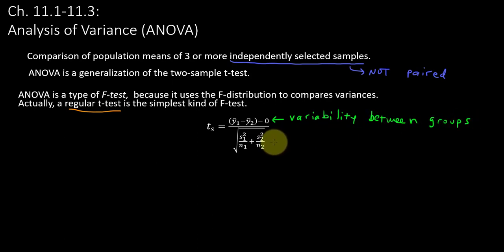And in the denominator, the test statistic here is the variability. We called it standard error—it is the standard deviation of the sampling distribution. And it has to do with s, standard deviation of the samples. So that's the variability within the groups. Those are two different types of variation. And because the test statistic here is a ratio of these two types of variability, it in essence is a type of f-test.